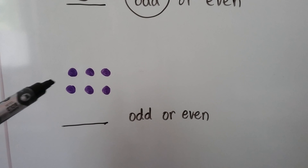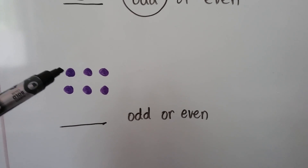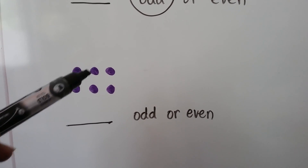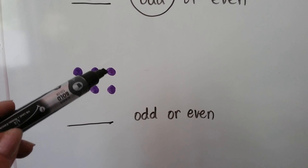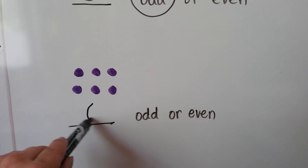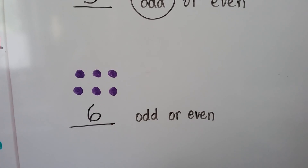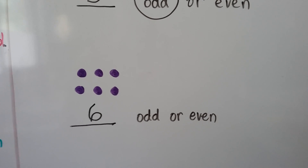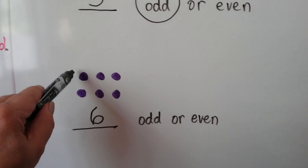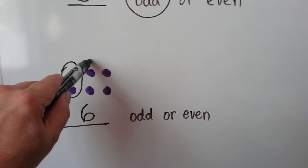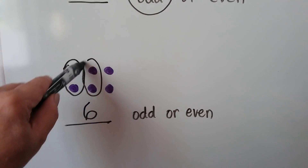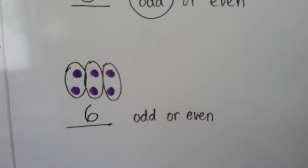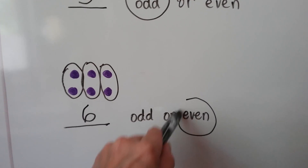Let's count the dots. How many purple dots are there? 1, 2, 3, 4, 5, 6. Is it odd or even? Is 6 odd or even? Well, we can make pairs — three pairs with none left over, so it's even.